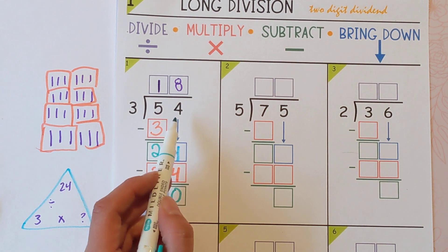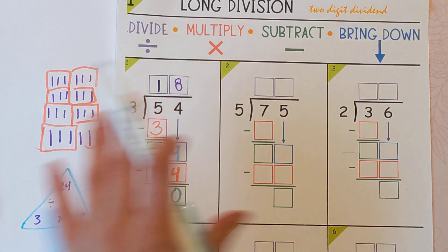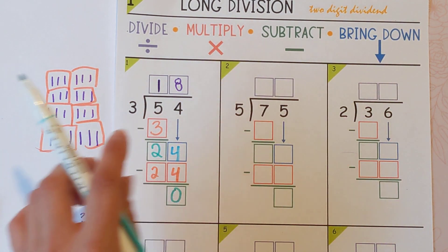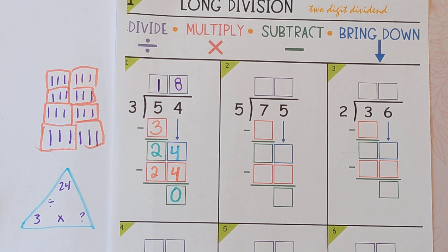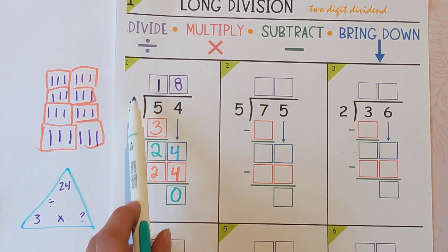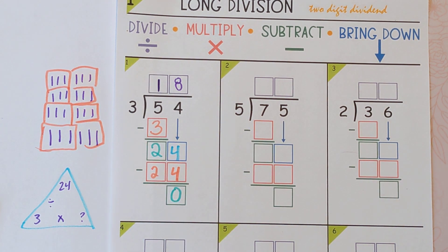So it means if I had 54 donuts and I put them into three boxes, I would have exactly 18 in each box. There's no leftover. It divides perfectly. So if you wanted to double check your work, you would do three times 18 and it would equal 54. That's how we do the standard algorithm.